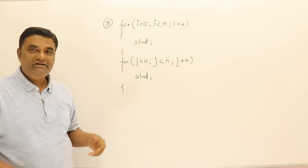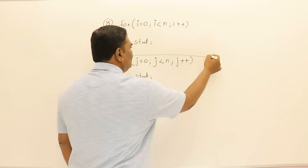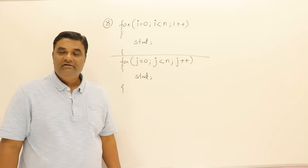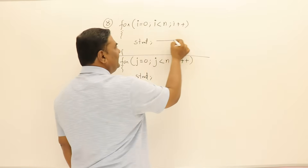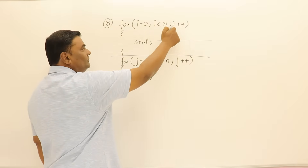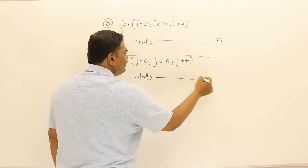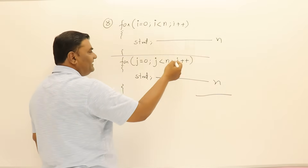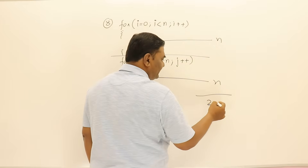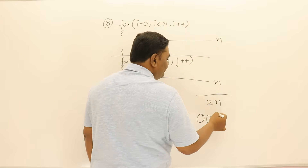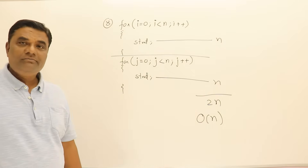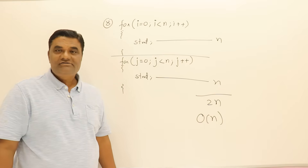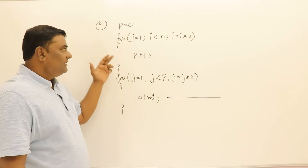The next example has two independent for loops — one after another, not nested. The first is an incremental loop iterating n times, so order of n. The second is also an incremental loop, also order of n. Combined, the total time is n plus n equals 2n, which is order of n. These are independent loops, so the time is order of n, not n squared.